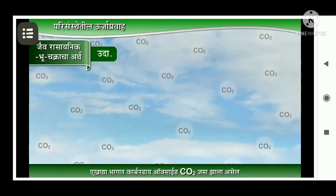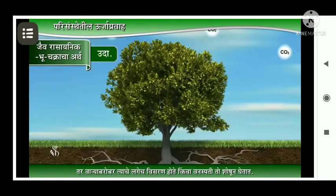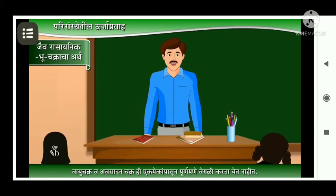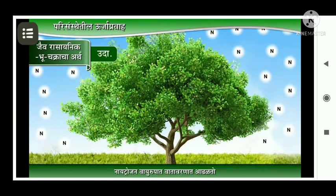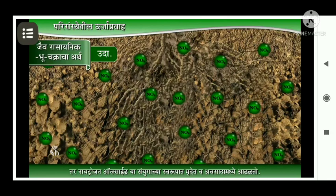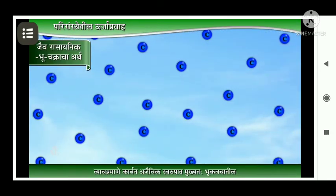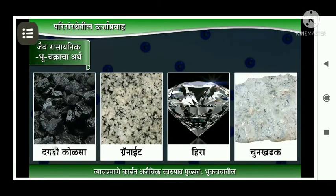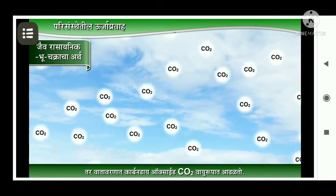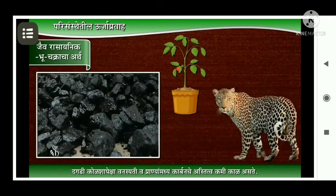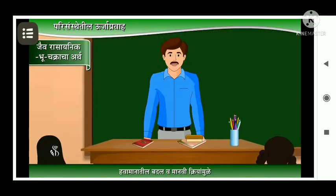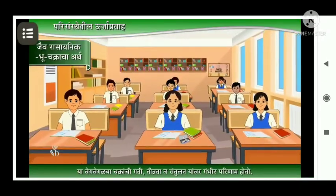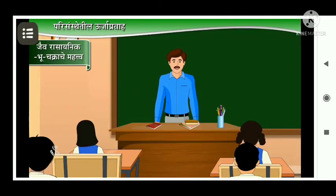For example, if carbon dioxide accumulates in one region, it immediately circulates with the air. However, carbon stored in rocks, coal, granite, and diamonds within the Earth's crust moves slowly through the geological cycle. If this balance is disturbed, it has serious consequences for life.